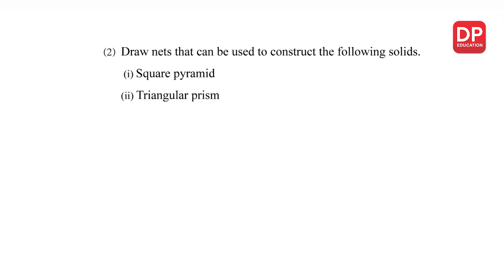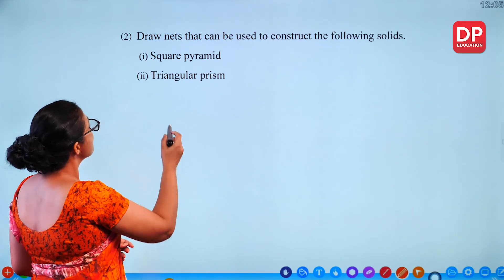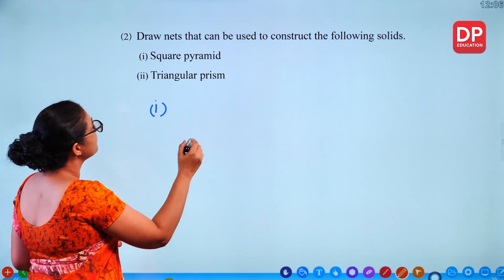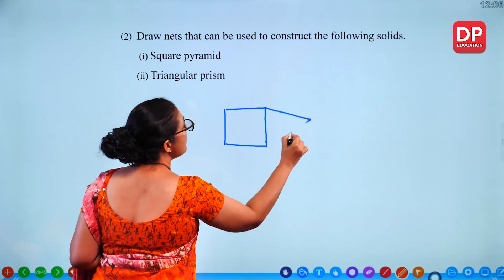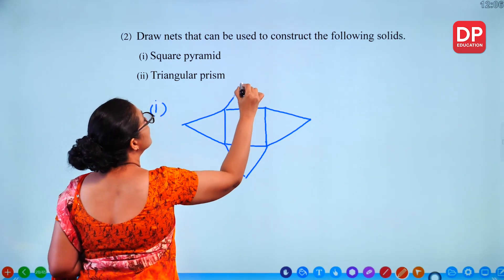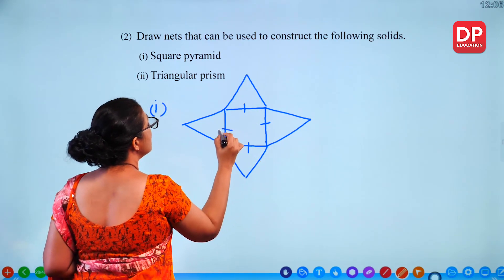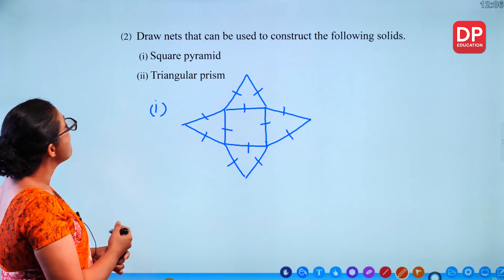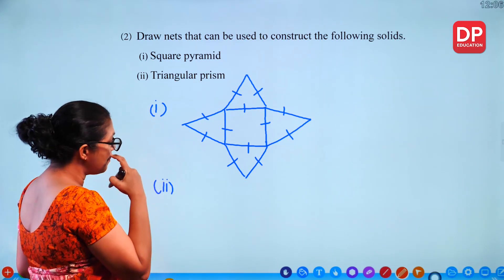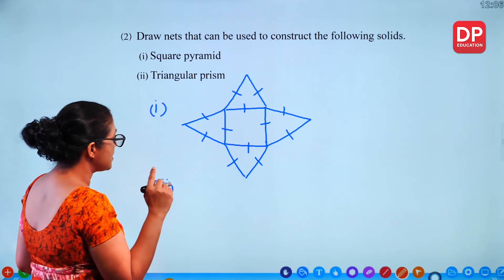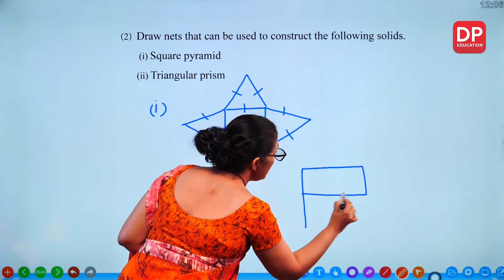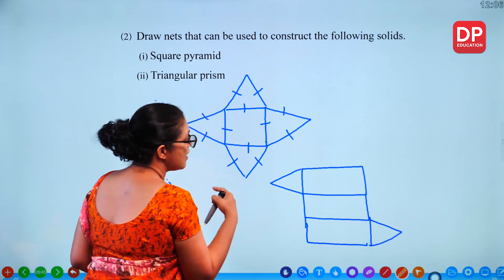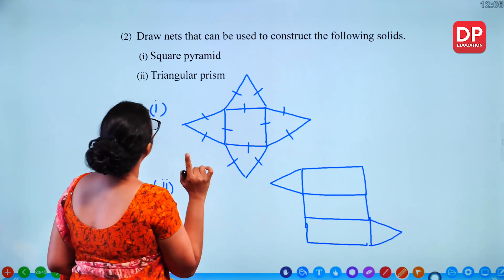Draw nets that can be used to construct the following solids. For a square pyramid: draw a square in the center and attach 4 triangles around it — all sides equal. For a triangular prism: draw 3 rectangles in a row and attach 2 triangles — when folded you get a triangular prism.